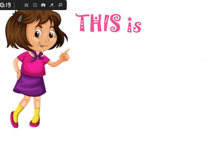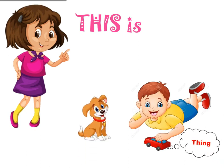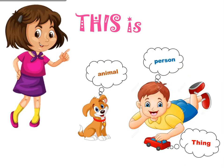Let's start with 'this'. We use the word 'this' to point out a single thing, animal, or person. But it has to be near us — قريب مننا. So we use 'this is' to talk about a thing, animal, or person that is near us. One — single.